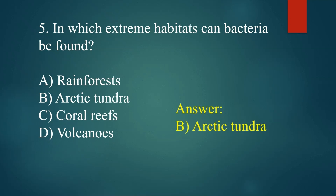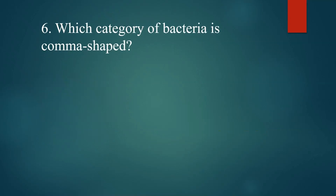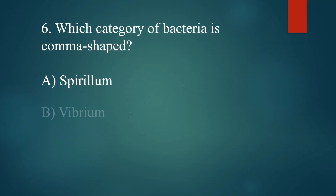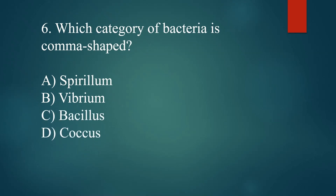Which category of bacteria is comma-shaped? A. Spirillum. B. Vibrio. C. Bacillus. D. Coccus. Answer: B. Vibrio.